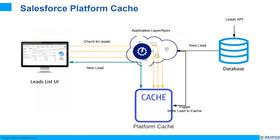Salesforce platform cache — let me explain with an example. In the database, we have new leads coming in, and we have the UI experience where we see the lead list. Once we have an application layer where we can store the data in platform cache, on the first login we get the data from the database and store it in platform cache. Every subsequent login, we can get the data through platform cache and display it on the UI — we need not go back to the database. Hence, the UI experience increases and response time decreases.